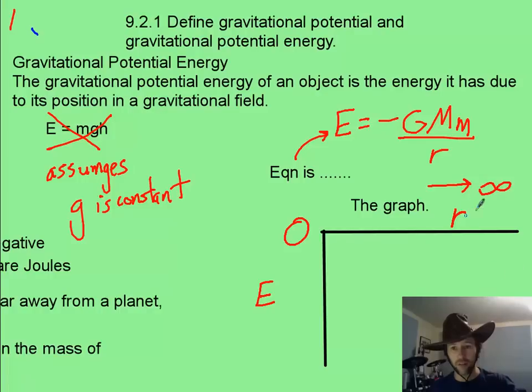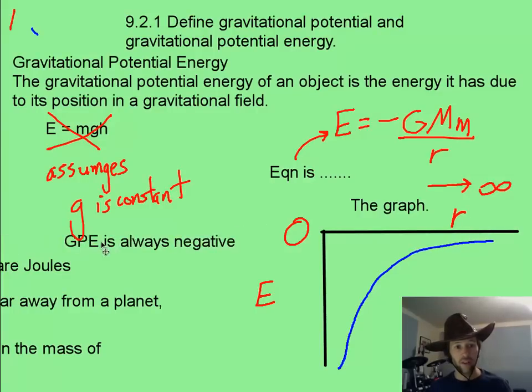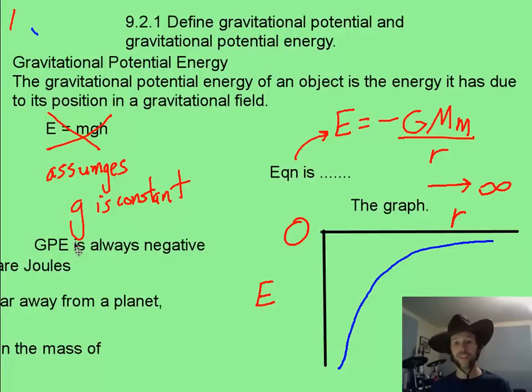If we draw our graph here, where x-axis is the radius, or the distance from the center, and the y-axis is our negative energy, we get a shape like this. And the crazy thing is that this energy, this GPE, is always negative.